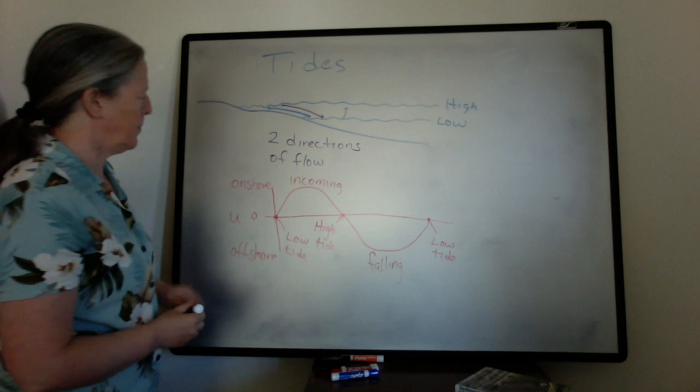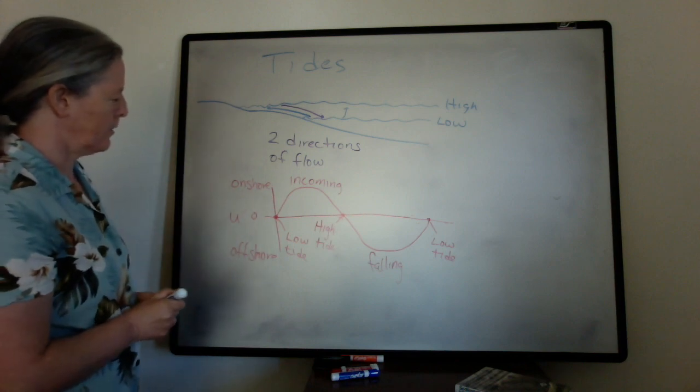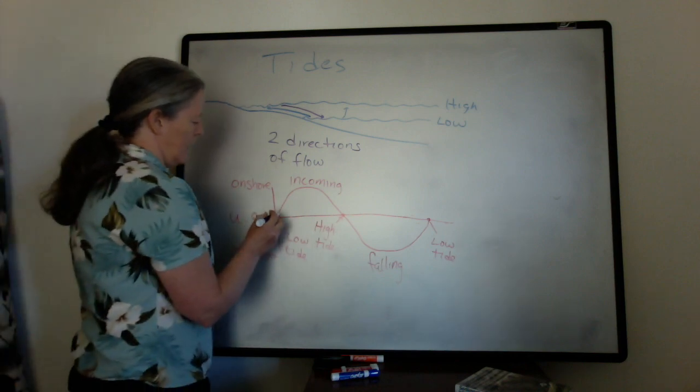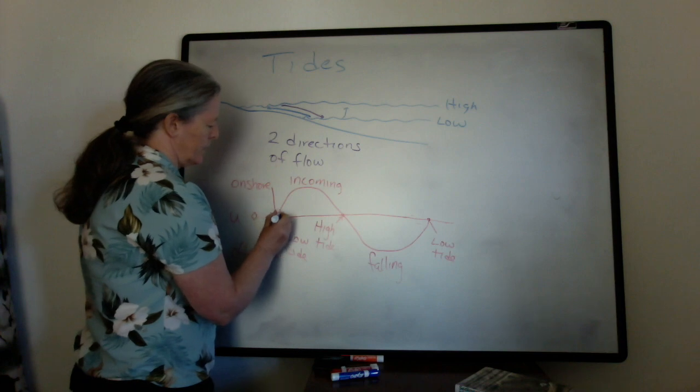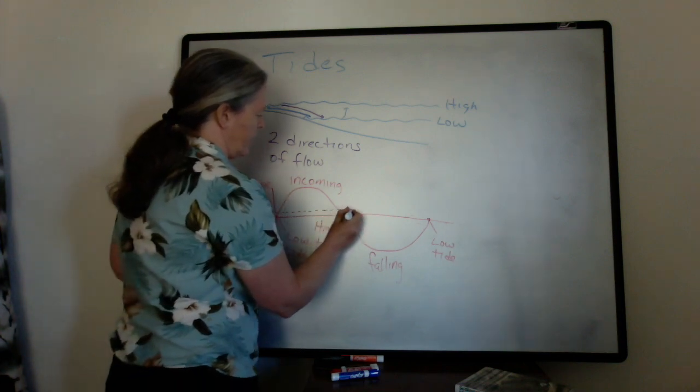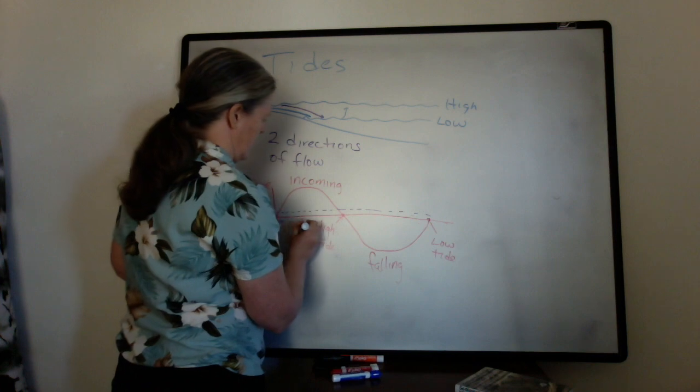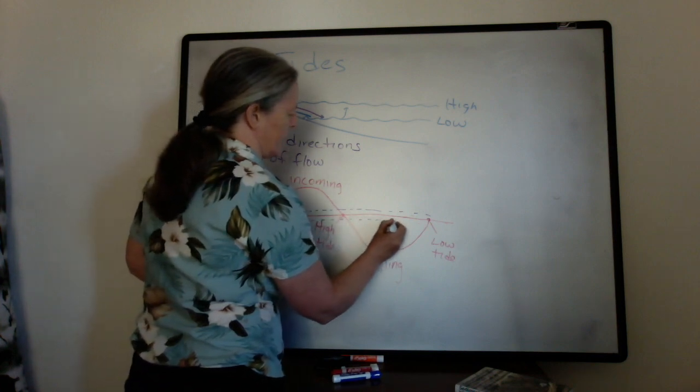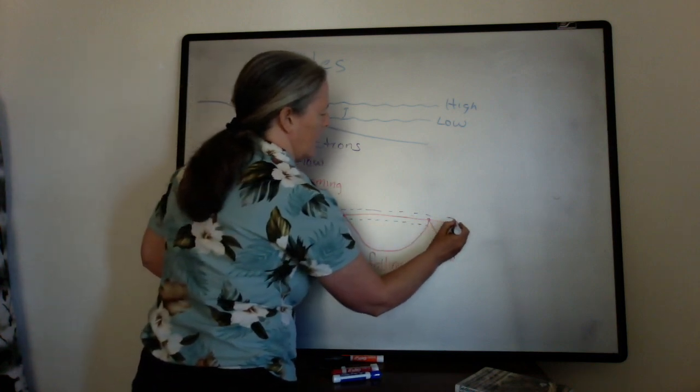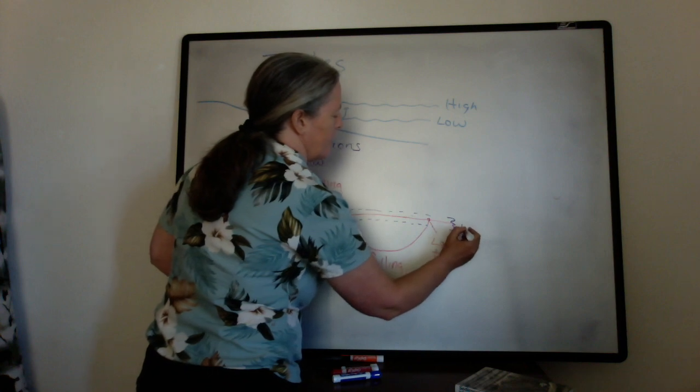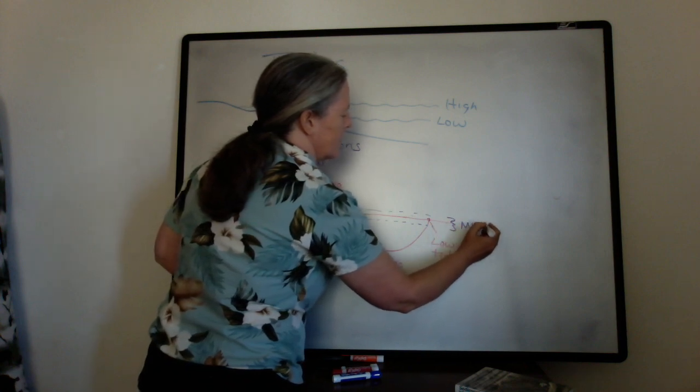If we think about the grain size in the zone in here, and the flow speed is very low, we can use our Holstrom diagram. In this case, we have mud-sized grain accumulate.